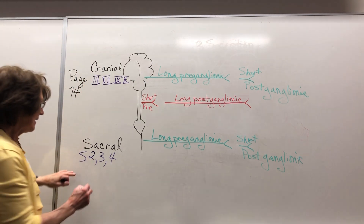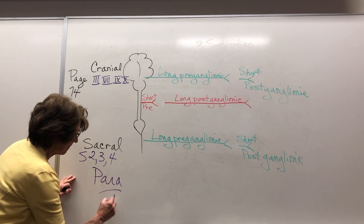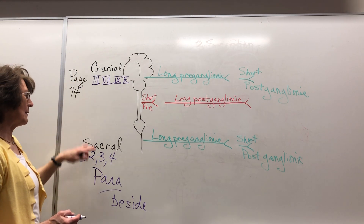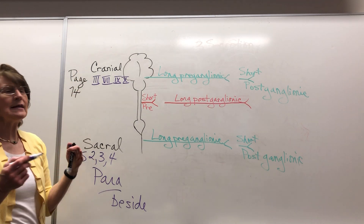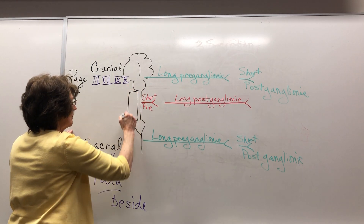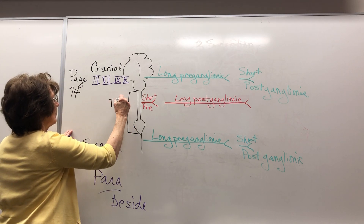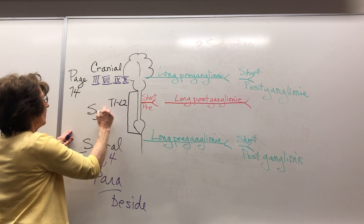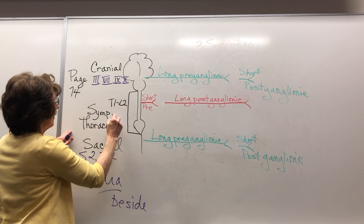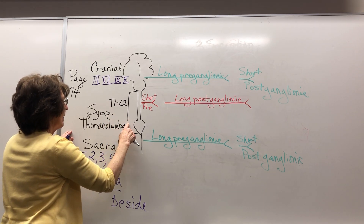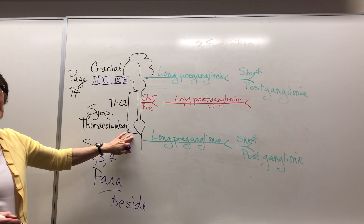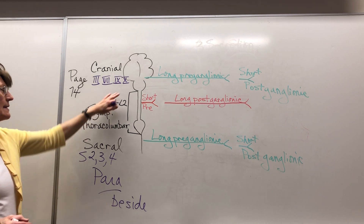What does parasympathetic mean? Para means beside, so parasympathetic is beside the sympathetic. Where's the sympathetic? It's thoracolumbar — going from the thorax down to the lumbar. So the sympathetic runs from here to here.